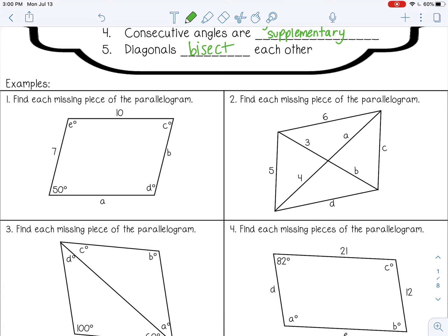First of all, we know opposite sides are congruent. So 10 and A will be congruent, which means A is 10. And then B would be 7.